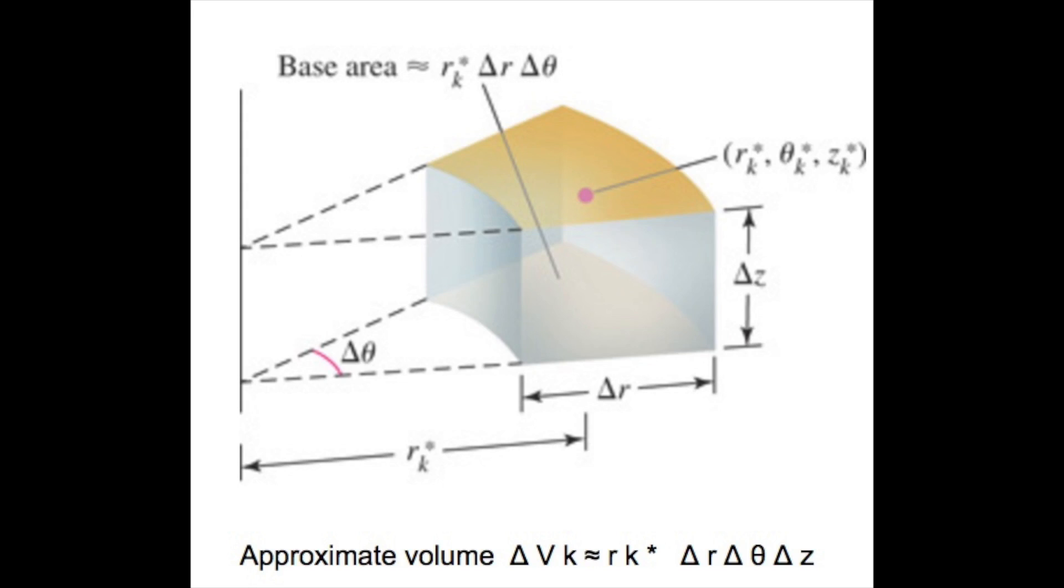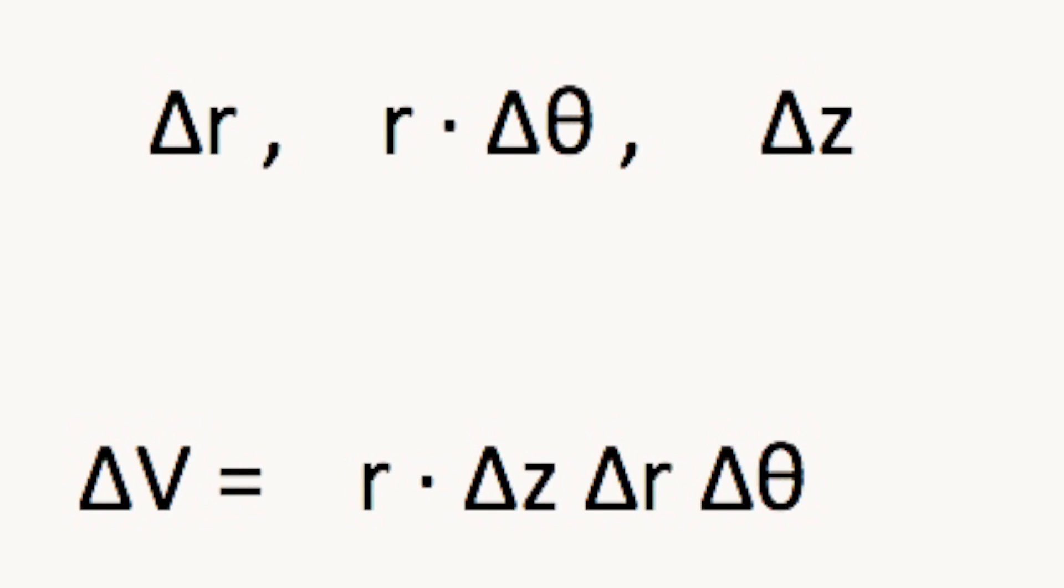We will be partitioning some region D into cylindrical wedges formed by the sides in the change in R, R times the change in theta, and the change in Z in the coordinate directions.